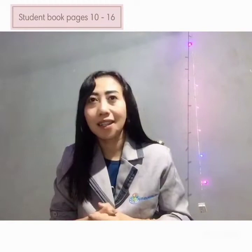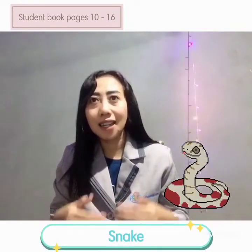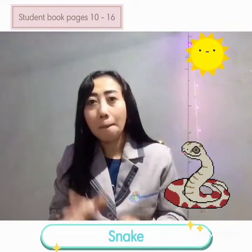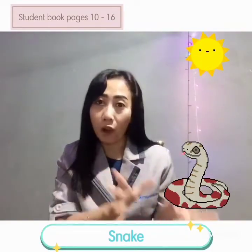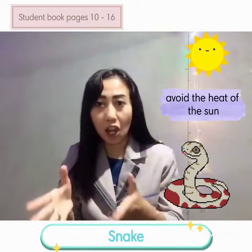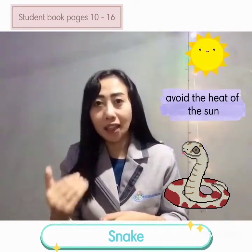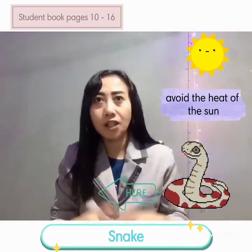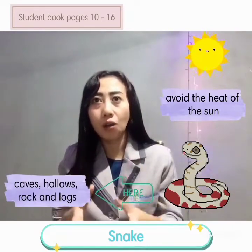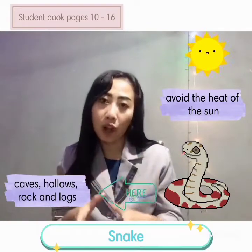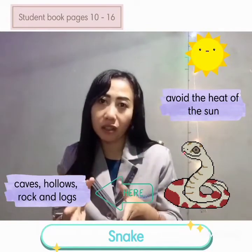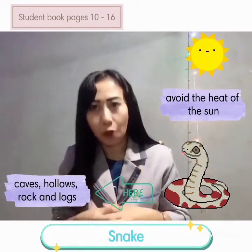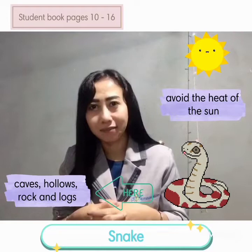Number three, snakes. Snakes in some areas must avoid the heat of the sun, so they live in caves, hollows, and rocks that protect them from the heat of the sun.